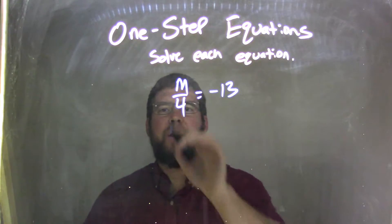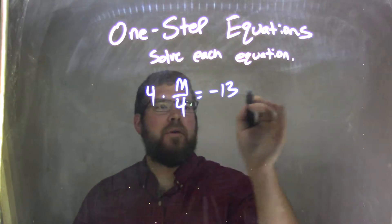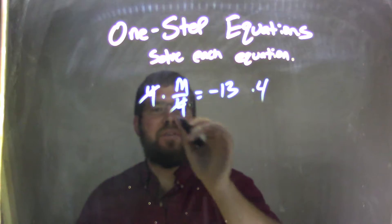Opposite of division is multiplication. So multiply 4 to both sides, and now I'm left with, well, the 4 is canceled here, just m.